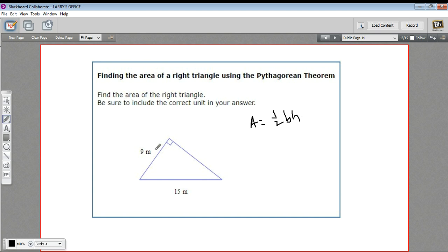In a right triangle, the base and the height can be either of the legs, not the hypotenuse, but either of the legs.